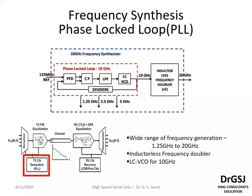This voltage signal is given to the VCO either to increase or reduce the frequency of the VCO. To avoid random and high amplitude changes, a low pass filter is used to reduce the variations and allow for a smoother transition in the VCO. This particular PLL generates a 10 gigahertz output, 5 gigahertz output, and 2.5 and 1.25 gigahertz outputs from the divider circuit, covering a wide frequency range from 1.25 gigahertz to 20 gigahertz.